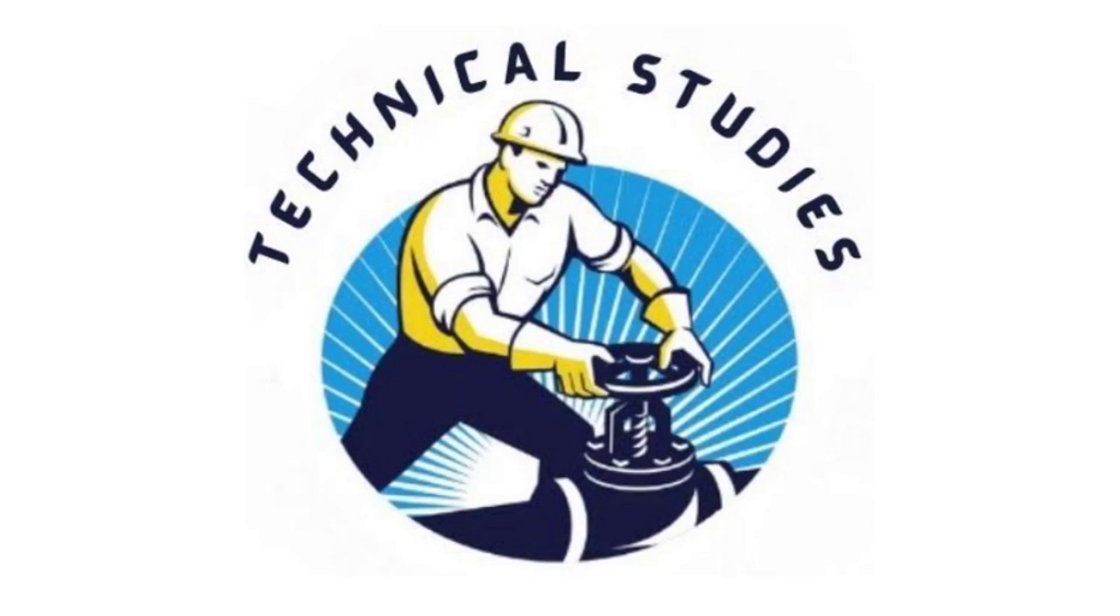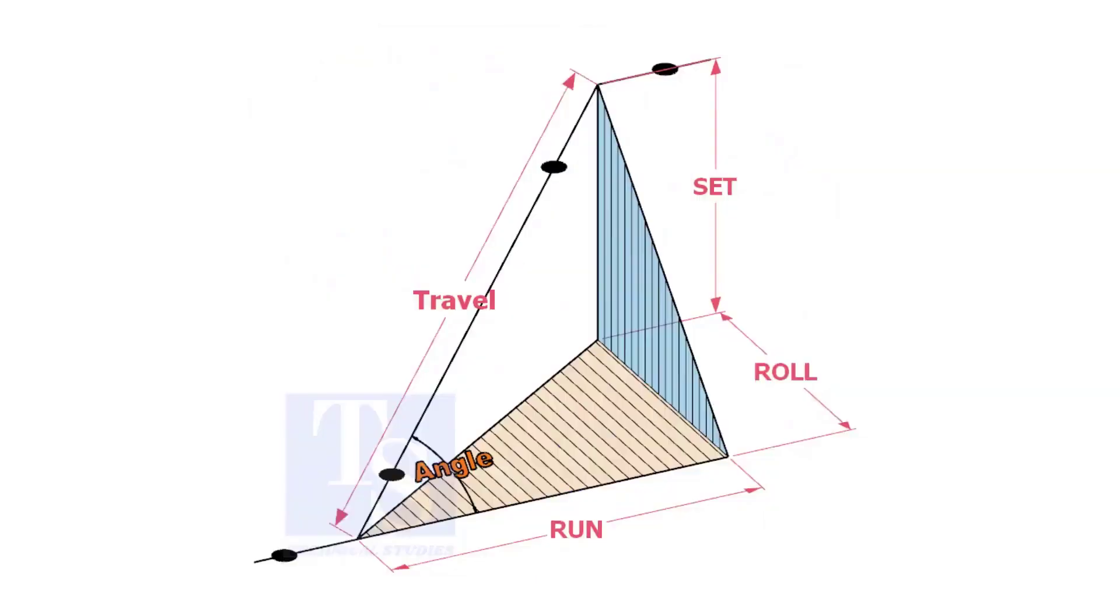Welcome to technical studies. In a piping drawing of a double rolled offset, usually the dimensions of the run, set and roll are given.